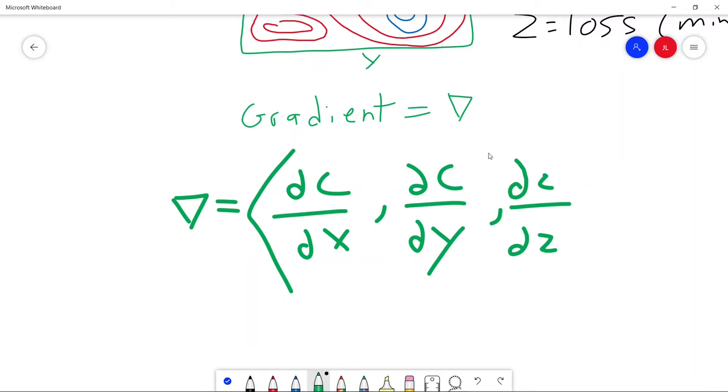Now, please note that this vector can go into hundreds of dimensions. Basically, the more weights or biases that you add, the more elements are going to be added to your gradient vector.